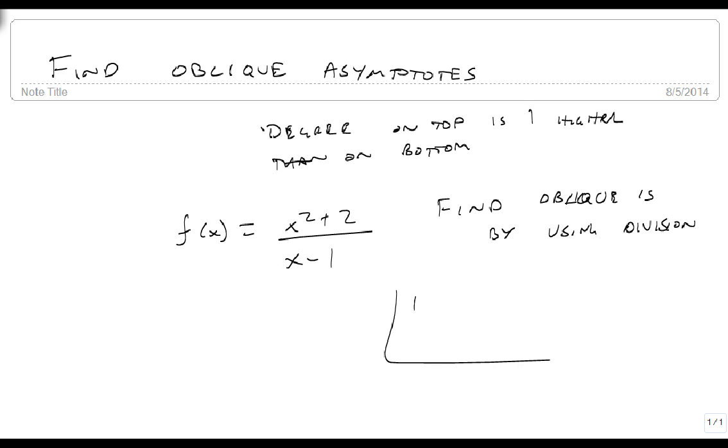So inside we get 1, 0, and 2, and we get a 1 on the outside. And so we get x plus 1 plus 3 over x minus 1.